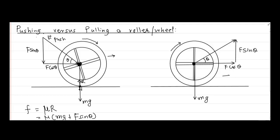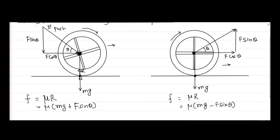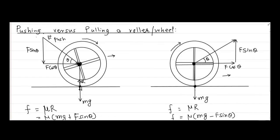Again, F cos theta is responsible for taking the wheel in the forward direction. F sin theta, as we can see, is now acting in the upward direction. So the normal reaction here will comprise of Mg minus F sin theta, because F sin theta is acting upward. Using F equals mu R, the frictional force becomes mu times (Mg minus F sin theta). Thus we can clearly say that the frictional force when we pull is lesser, because we have Mg minus F sin theta whereas in pushing we have Mg plus F sin theta. Since the frictional force when we pull the roller is less, it is easier to pull a roller than push.